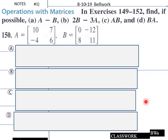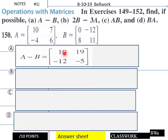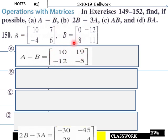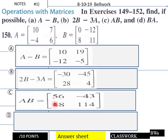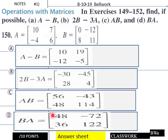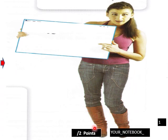Welcome back everybody. Hopefully you're done. For A minus B, this will be your A minus B matrix. For B, 2B minus 3A, you should have that. For AB, A times B, you should come up with that result. And for B times A, you should come up with this here. Now into our lesson today.